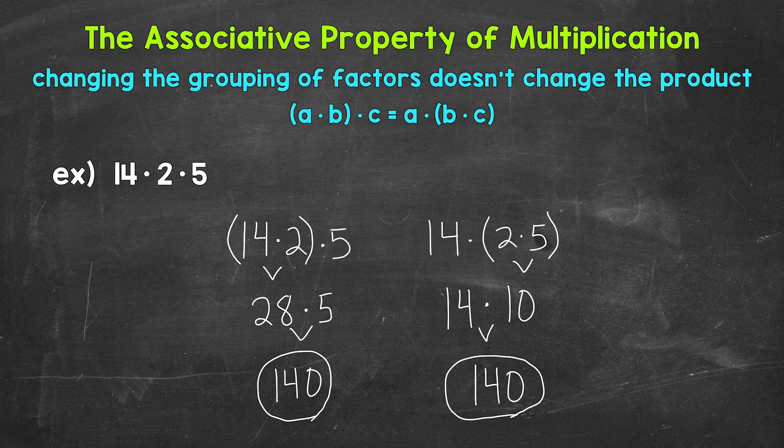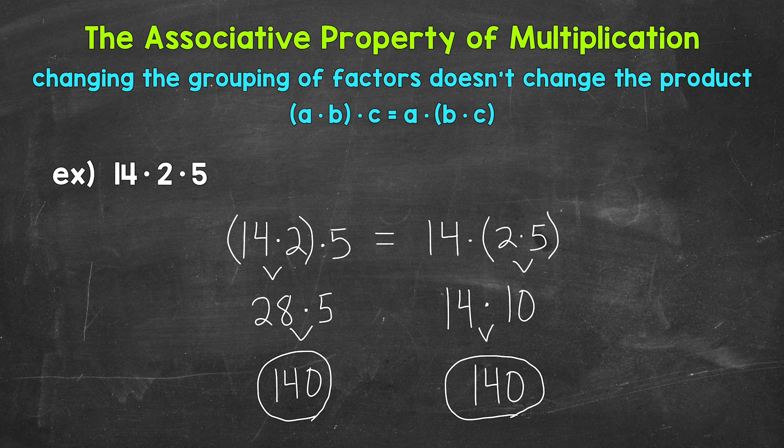And that's the associative property. (14·2)·5 equals 14·(2·5). Changing the grouping of factors didn't change the product. We got the same thing either way.